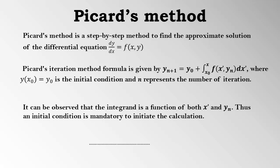Picard's iteration method formula is given by y_{n+1} = y_0 + integral from x_0 to x of f(x', y_n)dx', where y(x_0) = y_0 is the initial condition and n represents the number of iterations.